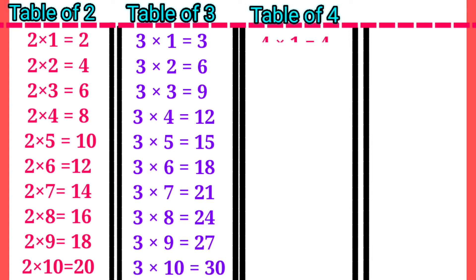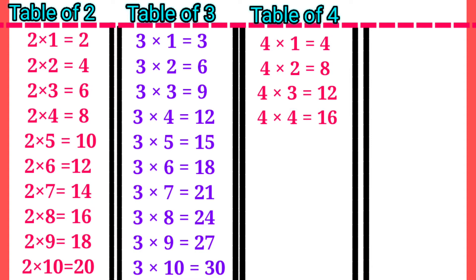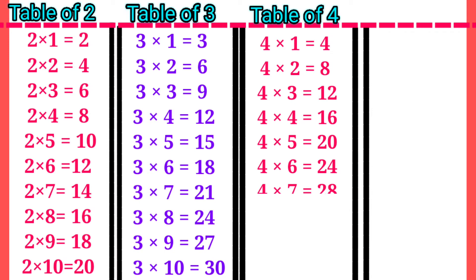Table of 4: 4×1=4, 4×2=8, 4×3=12, 4×4=16, 4×5=20, 4×6=24, 4×7=28.